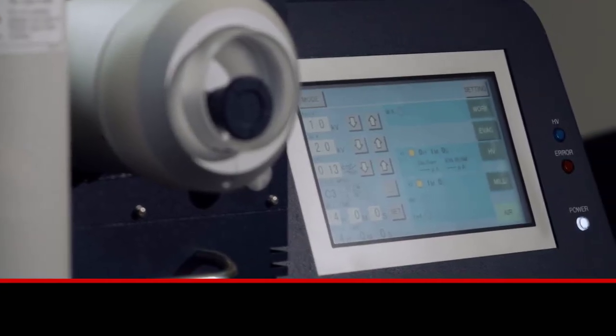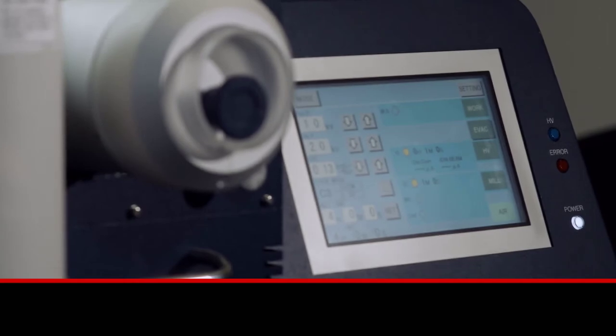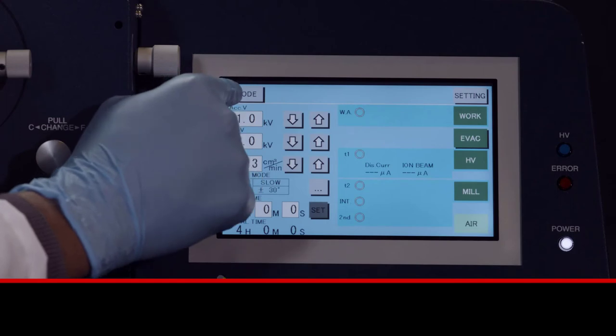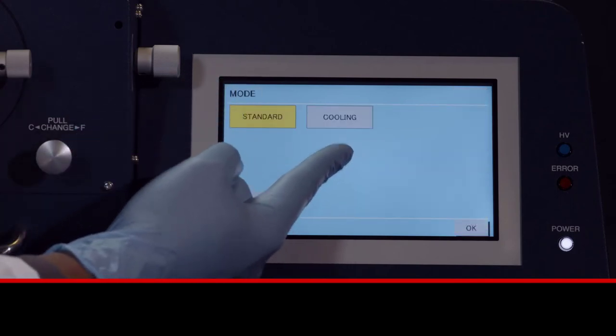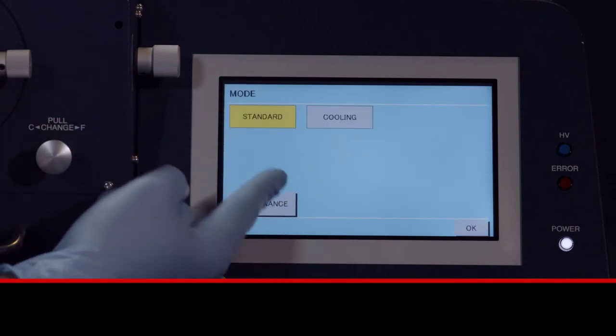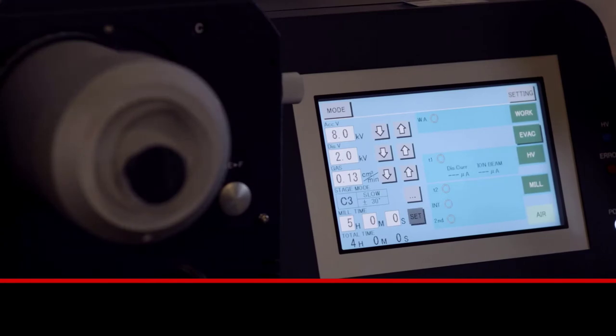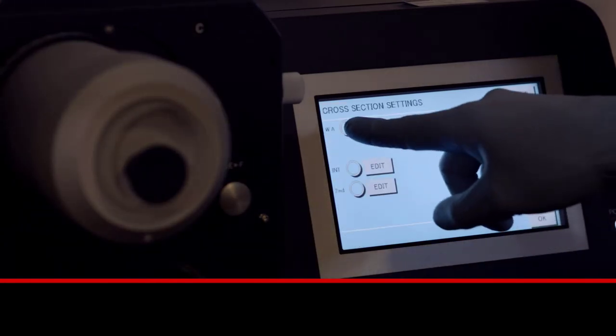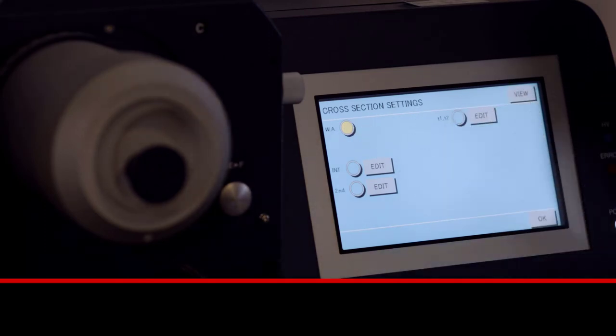The ArBlade 5000 includes a user-friendly touch screen panel which contains all the functions needed for a successful milling session. Controls are provided to adjust the ion beam accelerating voltage and beam current. For beam-sensitive samples, variable stage speed controls can be adjusted and additional milling modes for intermittent beam irradiation to reduce the amount of time the sample is exposed to the ion beam.